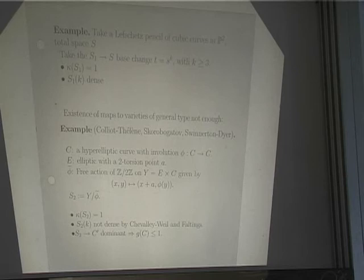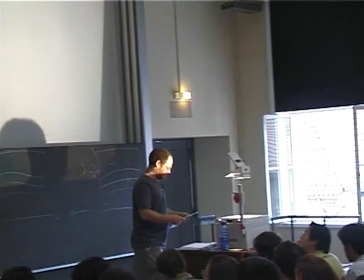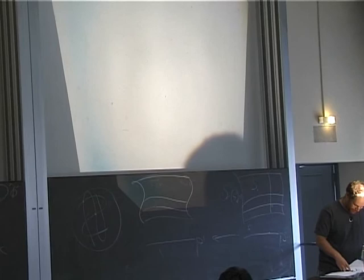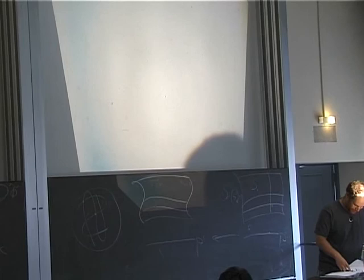Life is more complicated; you still argue using Faltings. The topic of the next lecture will be exactly how to understand what's in between general type and Kodaira dimension zero. Remember these two examples because they are going to come up. Let me make a very quick discussion of the open case.